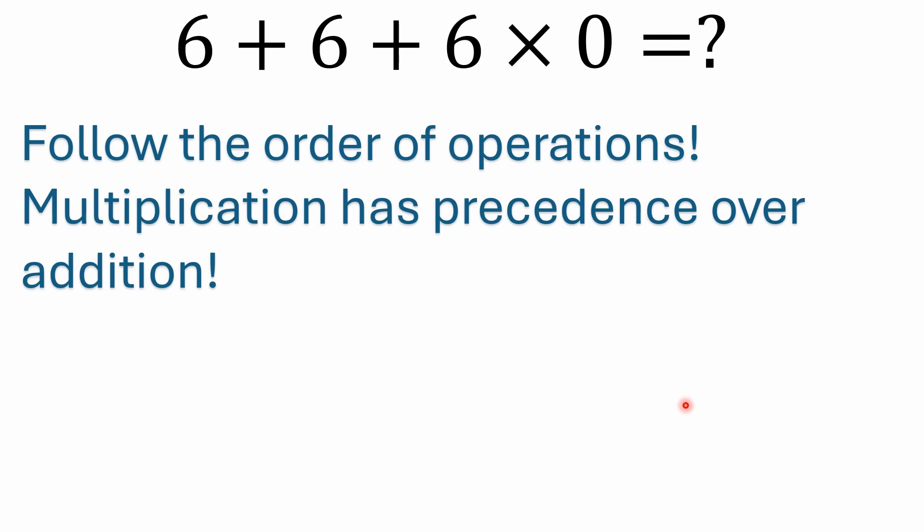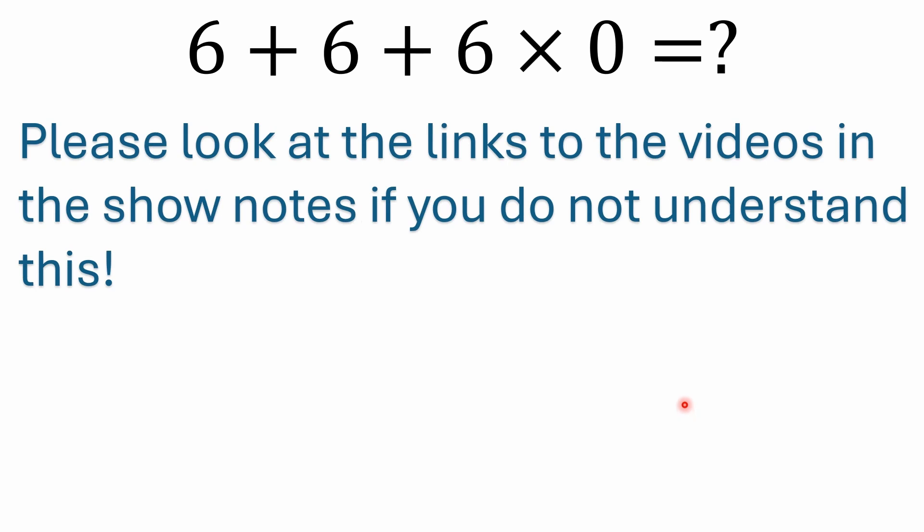If you got 12, go ahead and stop the video and move on. For everybody else, I want to discuss it. A lot of people who still think it's 0 — please look at the links in the description of this video. I have links with a lot more detail on the order of operations and all the acronyms like PEMDAS, BODMAS, BEDMAS, and BIDMAS. If you're getting 0 and really think it's 0, please go watch some of that.